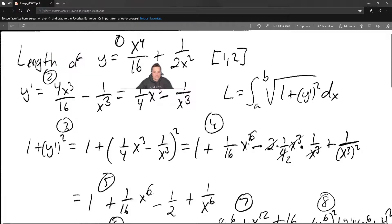Welcome, and in this one I'm going to show you how to find the length of the following curve: y equals x to the fourth over 16 plus 1 over 2x squared on the interval 1 to 2. I've got it pre-written just because it's too much to try to write out. It would take too long.